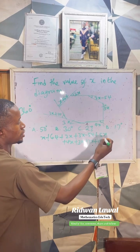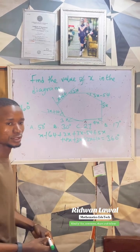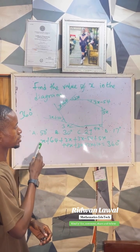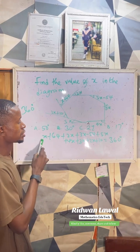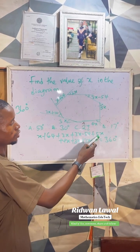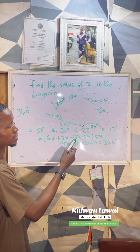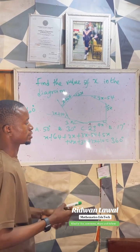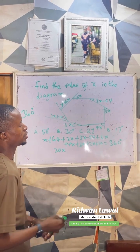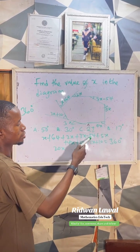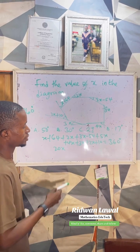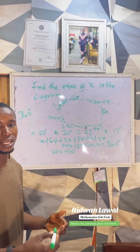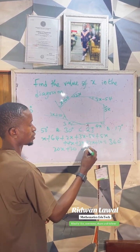All of these must be equal to 360 degrees. Now let's collect like terms. We have x plus x, that's 2x, plus 2x is 3x, plus 3x is 6x, then 11x, 15x, 18x, and that gives us 20x. Then for the constants: 64 minus 54 is 10, plus 10 gives us 20. So we have 20x plus 20 equals 360.